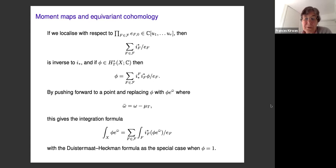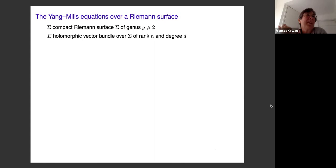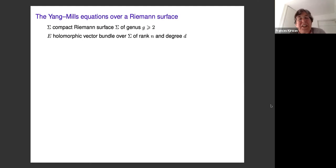Those are the key ingredients of the moment map and equivariant cohomology paper, and the same ideas slot into the Yang-Mills paper. Now I'd like to say something about the Yang-Mills equations over a Riemann surface. The basic ingredients are that we have a compact Riemann surface sigma — to avoid special cases let's assume the genus is at least two — and we're thinking about holomorphic vector bundles over this compact Riemann surface of fixed rank n and degree d.